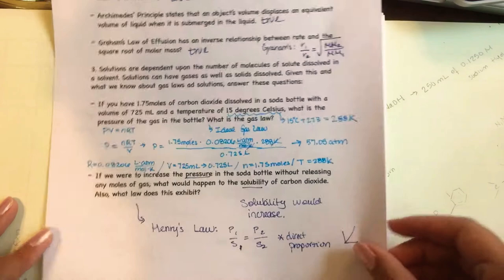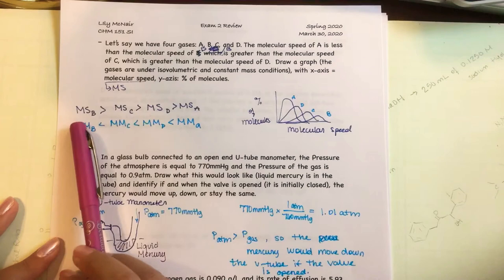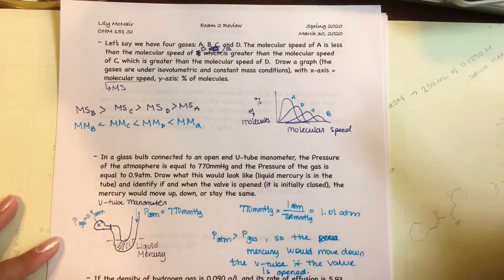The third page continues with gas laws. This is good theory: knowing that molecular speed is proportional to molar mass, so the faster the molecular speed, the lighter the molecule.